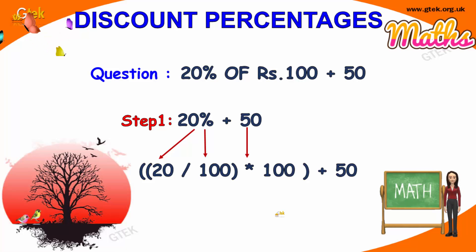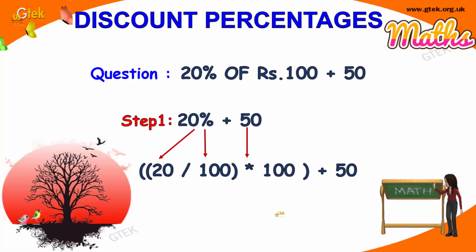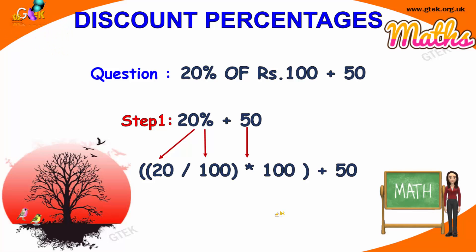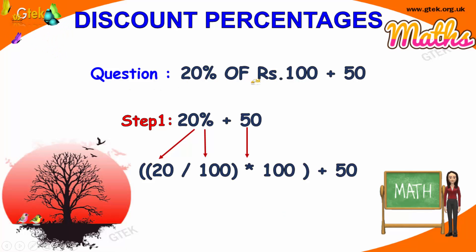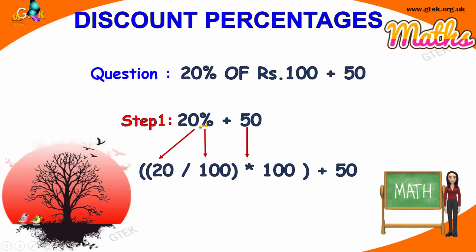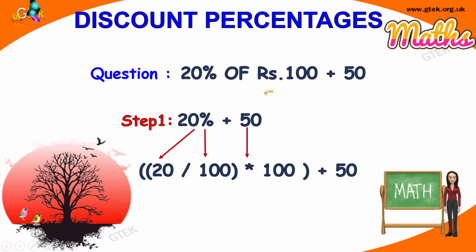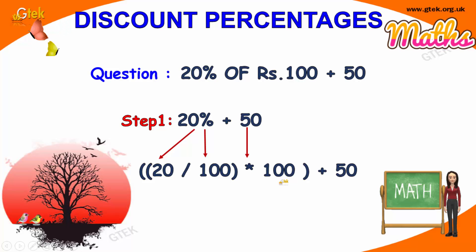Now for discount percentage — we are trying to find 20% of an amount. We have 20% of rupees 100. So 20% can be written as 20 divided by 100, multiplied by the value of 100.